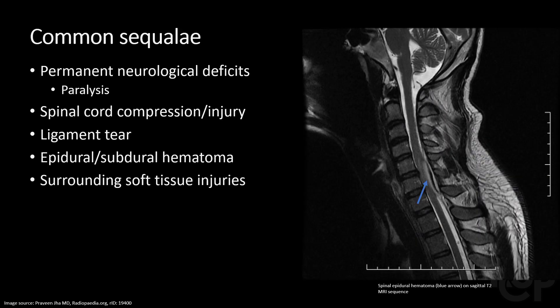Some dreaded sequelae of spine fractures are permanent neurological deficits, including becoming plegic. Some clues on imaging include ligamentous tear, which can lead to spinal column instability. Epidural or subdural hematomas can expand and lead to compressive symptoms, and more minor but not insignificant is damage to surrounding soft tissues including muscle and fat.